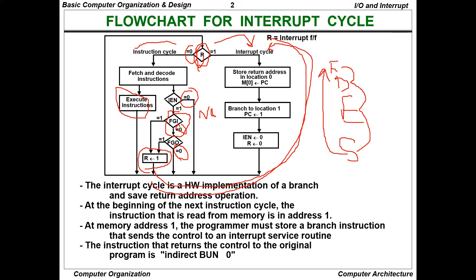The interrupt cycle is a hardware implementation of a branch and save return address operation. Branch means jumping to a particular location; save return address means saving where to come back after the interrupt. At the beginning of the next instruction cycle, the instruction read from memory is at address 1. At memory address 1, the programmer must store a branch instruction that sends control to an interrupt service routine.